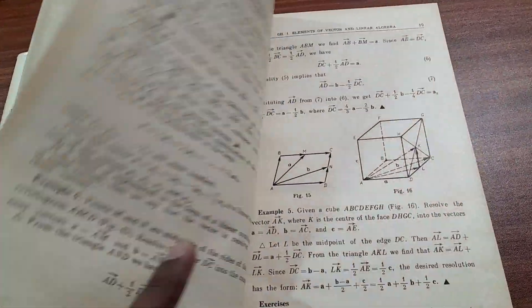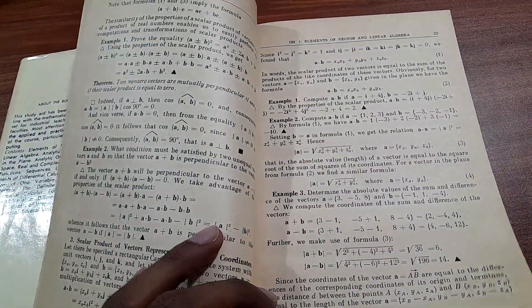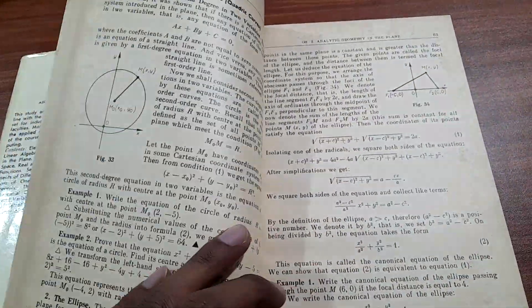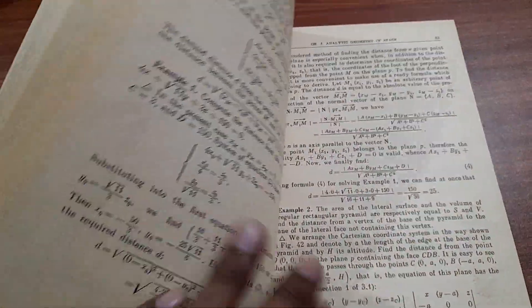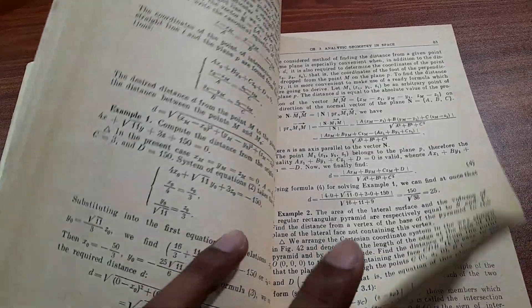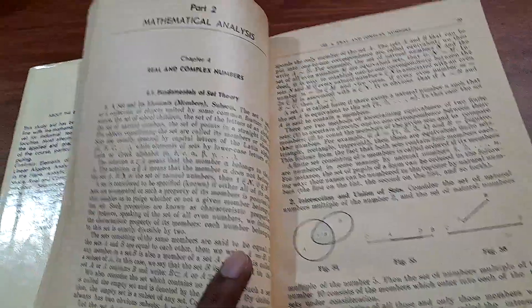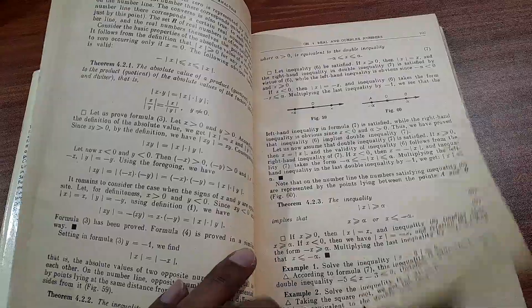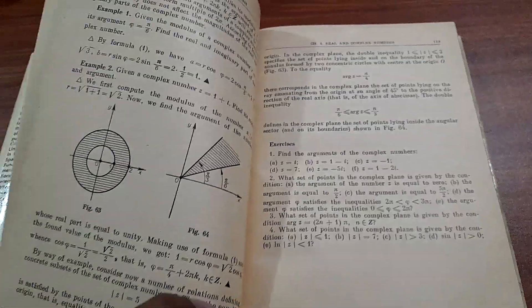I'll go through briefly. Here's Analytic Geometry in the Plane and Geometry in Space. Then we have Real and Complex Numbers - this is Part Two, Mathematical Analysis. There are exercises also, as you can see.